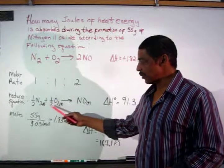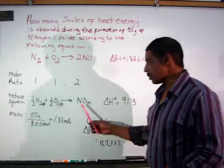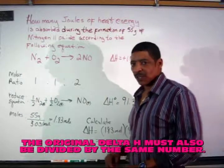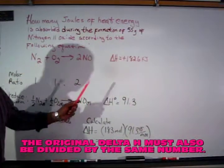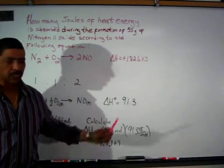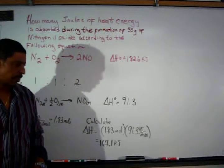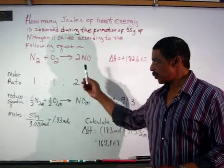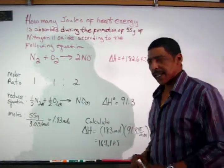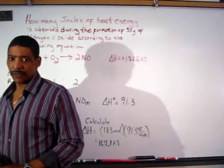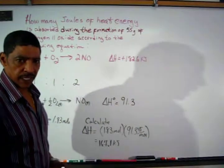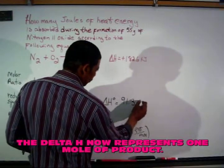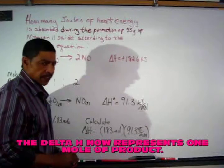This generates the following equation: one-half N2 plus one-half O2 yields 1 mole of N2O. Since I divided the equation by 2, I must also divide the Delta H by 2. Positive 182.6 kJ divided by 2 equals positive 91.3 kJ. By reducing the original equation to 1 mole of N2O, the standard Delta H is equal to 91.3 kJ per mole of N2O.